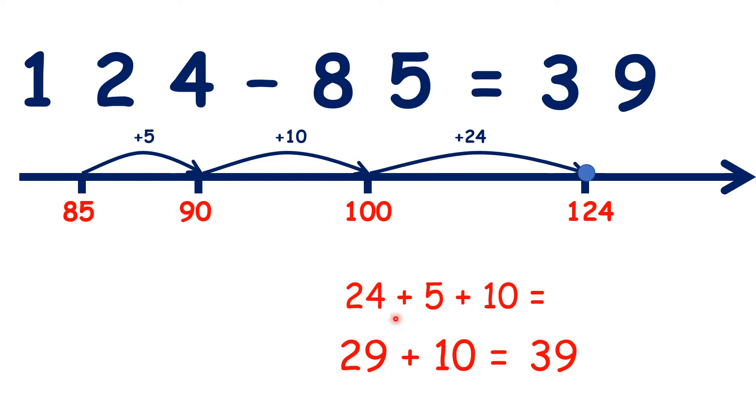I chose to add 10 at the end, because although I could have added 5 and 10 to get 15, then added 15 and 24 to get the answer of 39, working out 15 plus 24 is quite difficult. So I found it easier to add 24 and 5 first, and then add 10 to my answer.